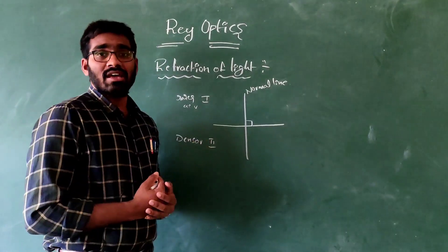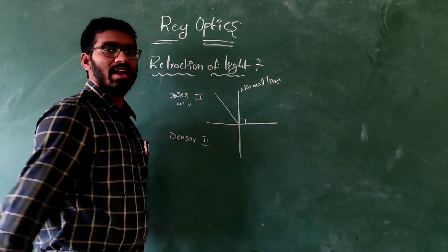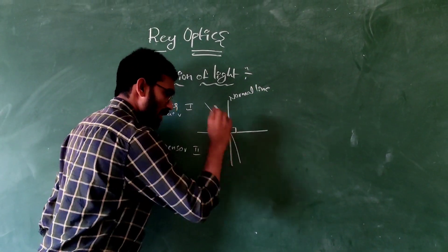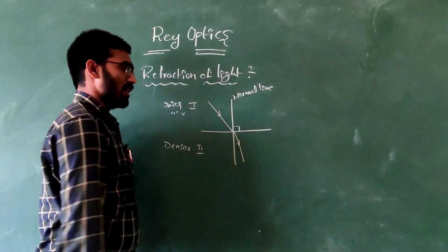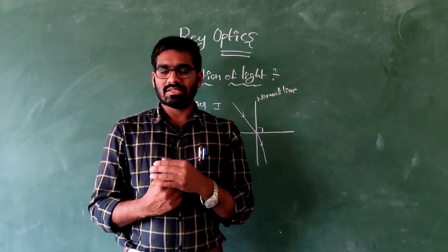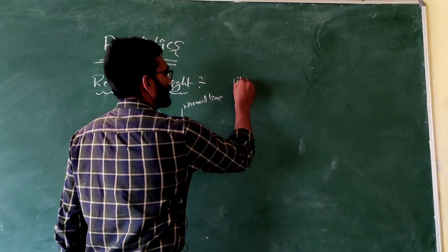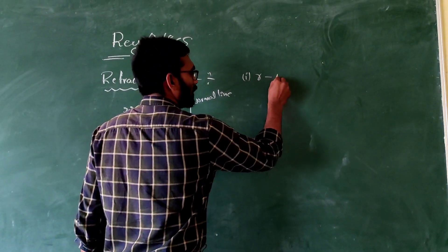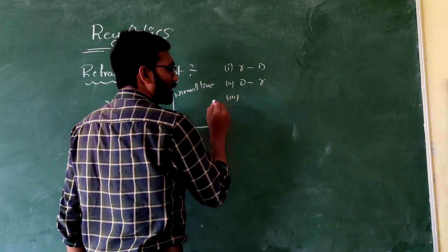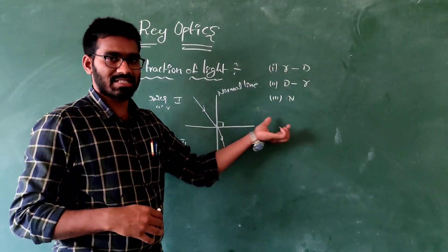Now I am going to discuss refraction of light. When a light ray passes through one medium, that light ray is bent or deviated. That phenomenon is called refraction of light. In this case, three cases are formed in refraction of light. Case one is rarer medium to denser medium. Case two is denser medium to rarer medium. Case three is the light ray passes through the normal line. I will explain these three cases.